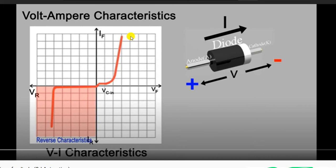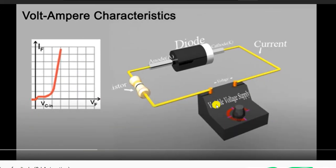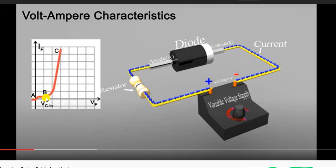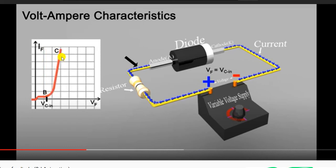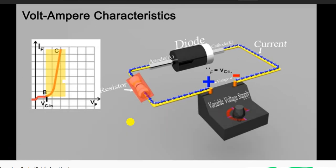The forward characteristic is in the first quadrant and the reverse characteristic is in the third quadrant. When voltage is slightly increased from point A to B, the diode offers a resistance of about 20 to 25 ohms. When the voltage exceeds the barrier potential, current increases sharply from B to C — this voltage is the knee voltage. Above the knee voltage, the diode offers only about 223 ohms, meaning it offers very little resistance in forward bias.